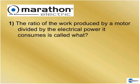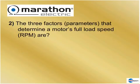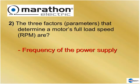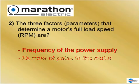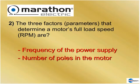Three factors determine the motor's full load speed: the frequency of the power supply, the number of poles in the motor (poles always come in pairs — you can't have an odd number), and the amount of slip. The slip is the torque — it produces the torque and requires the torque. Those three things determine motor speed.